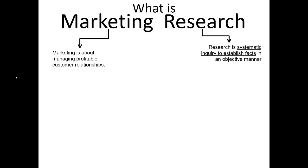Research, whether it's about marketing, finance, biology, or physics, is a systematic inquiry to establish facts in an objective manner. The word systematic is very important — that means we must have a process when we conduct our research. Establishing facts means we're trying to determine what is or is not true and real. A good researcher is completely indifferent to the conclusions that their research provides; instead, the researcher is satisfied that the process itself led to an honest, objective answer.